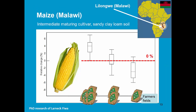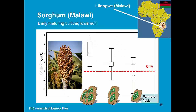Here we see the relative change in yield for maize as simulated for Malawi. The result differs in function of the amount of fertilizers applied. Because the simulations were run with an ensemble of climate models, a range of relative change is indicated. These are the results for sorghum, also simulated with an ensemble of climate models.